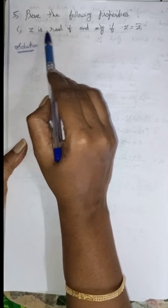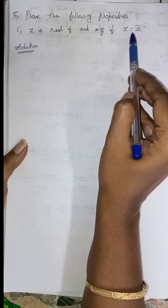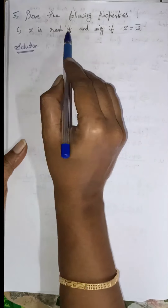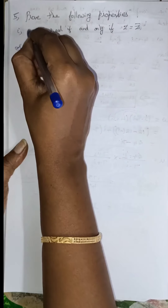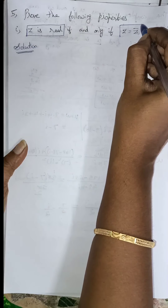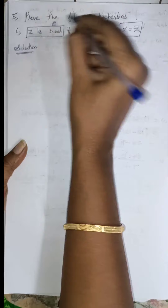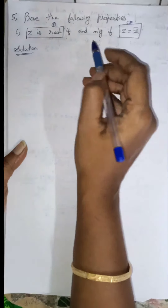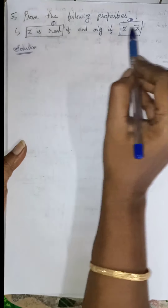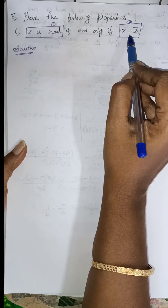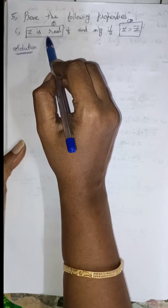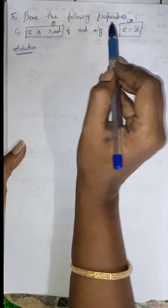First subdivision: Z is real if and only if Z equals Z bar. Since this is an if-and-only-if statement, there are two conditions. Condition 1 is given and condition 2 is to be proved. Then in the other part, condition 2 is given and condition 1 is to be proved. That is the meaning of if and only if.